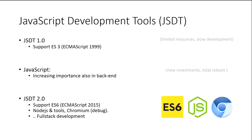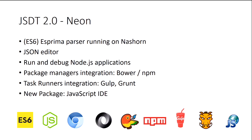With the aim to deliver JSDT 2.0, which supports ECMAScript 6 — a specification of 2015 — and to support Node.js and its tools like NPM, Bower, Grunt, and Gulp. The goal is to enable you to do full-stack development.